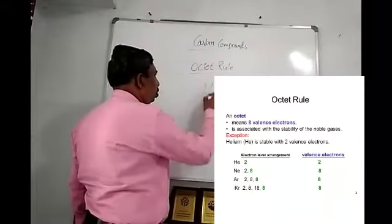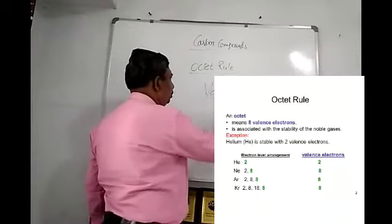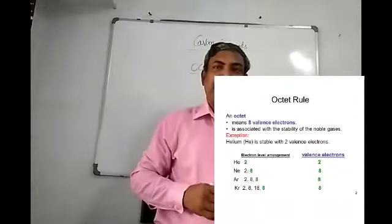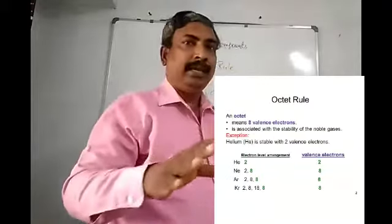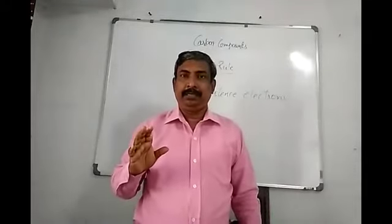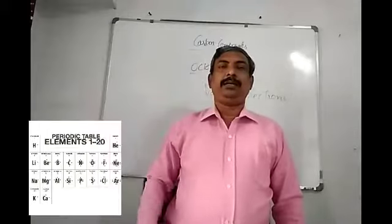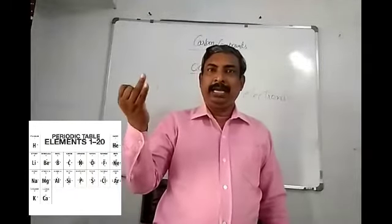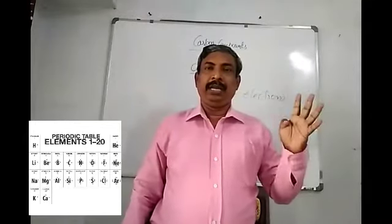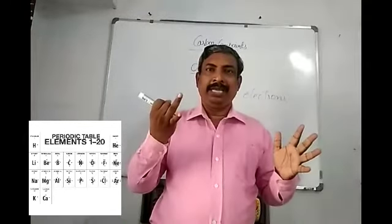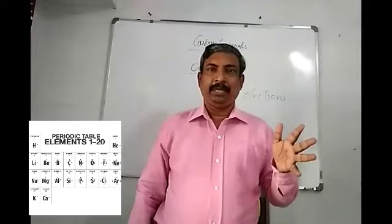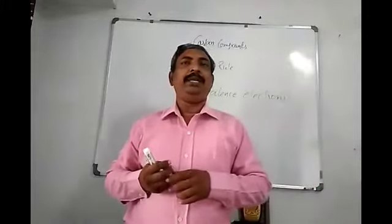To understand the octet rule, we should know about valence electrons. What are valence electrons? You should know the atomic number of an element. The elements with their atomic numbers: hydrogen, helium, lithium, beryllium, boron, carbon, nitrogen, oxygen, fluorine, neon, sodium, magnesium, aluminium, silicon, phosphorus, sulfur, chlorine, argon, potassium, calcium.